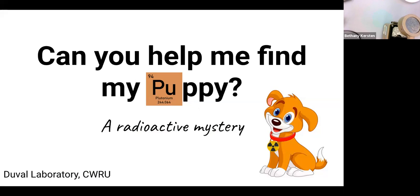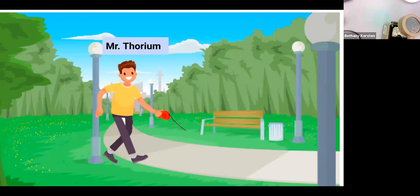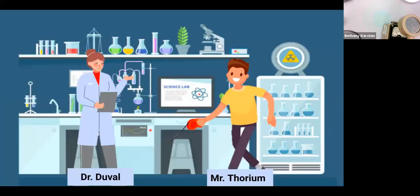We'll be asking for your participation throughout this, so if you could just type your answers or questions in the chat that would be the best way to communicate with us. Today you're going to be helping us find our radioactive puppy. Our friend Mr. Thorium was walking through the park one day with his dog Pluto, which is short for Plutonium, and one day she ran off. So Mr. Thorium is freaking out, wants to find his dog Pluto, and goes to his good friend Dr. Duval, who is a radiochemist.